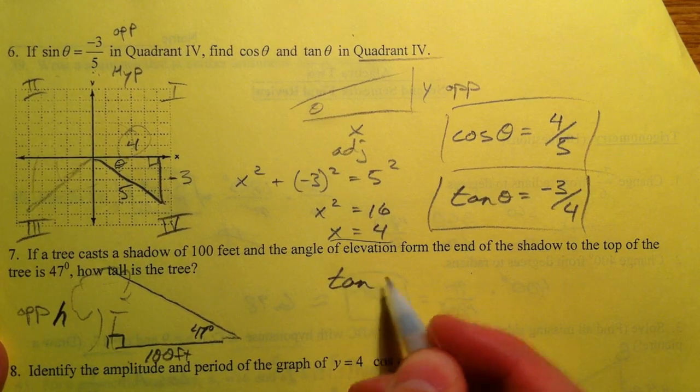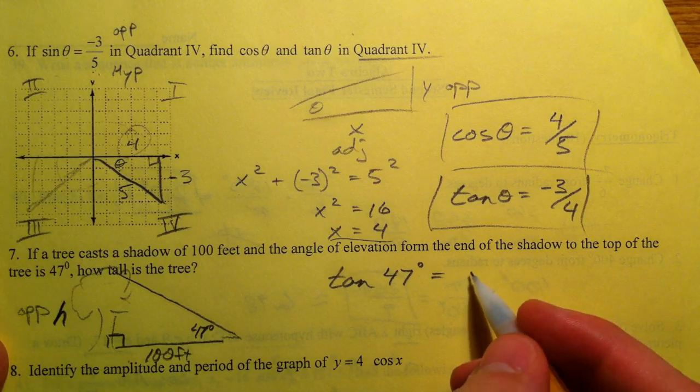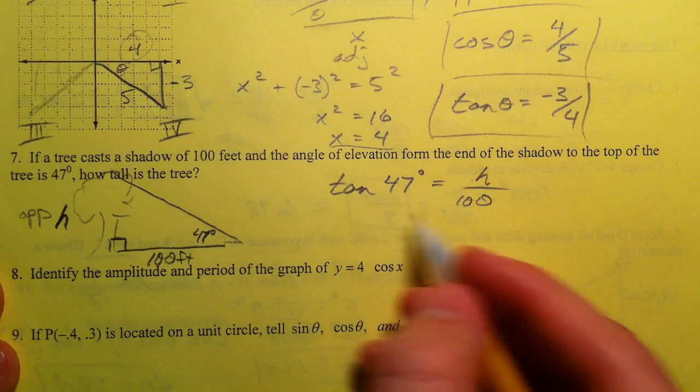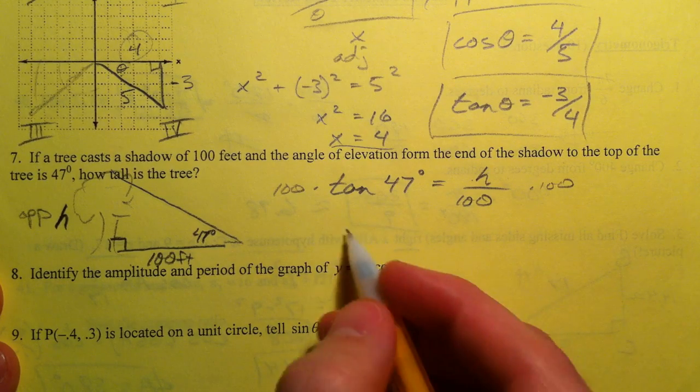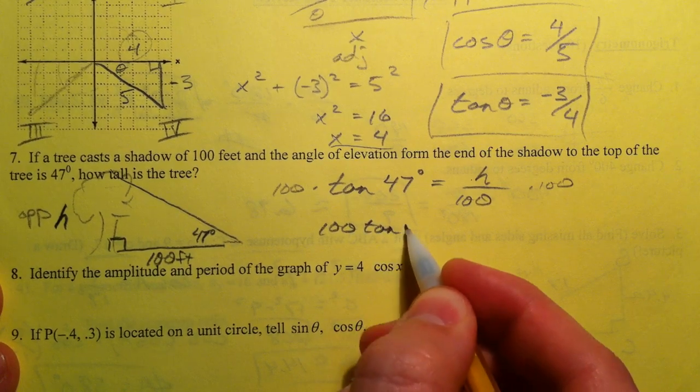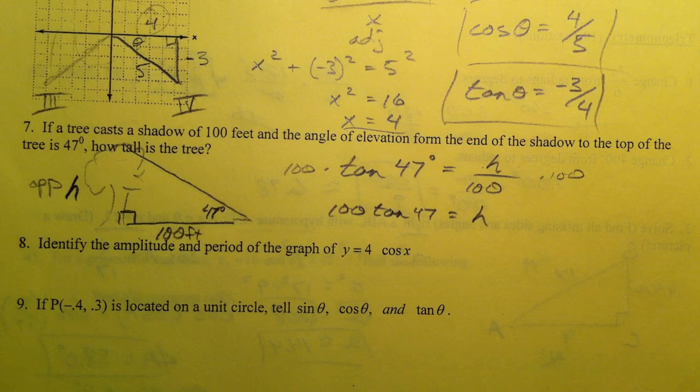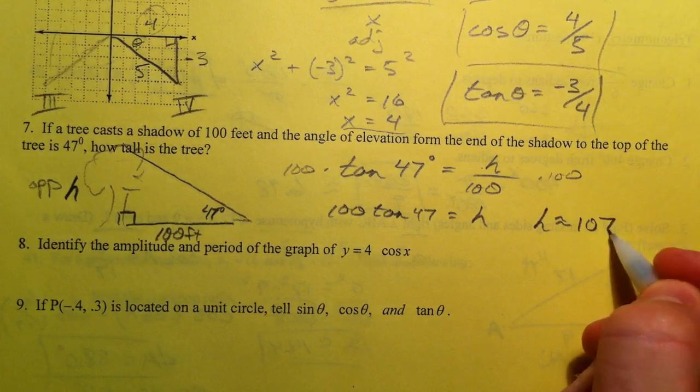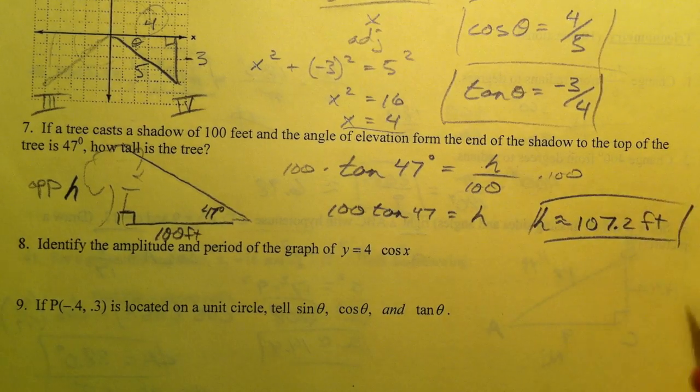We have the opposite and the adjacent. So I'm going to use tangent of that angle 47 degrees is equal to opposite h over 100. And let's multiply that by 100. Multiply by 100. So 100 times the tangent of 47 equals h. Making sure you're in degree mode still. 100 times the tangent of 47. So the height has to be 107.2 feet. So we've got ourselves a tall tree.